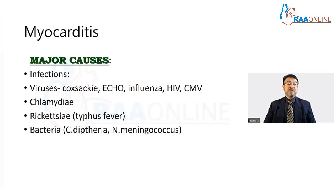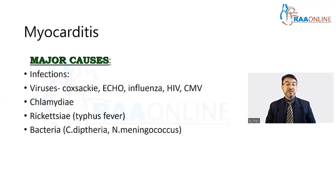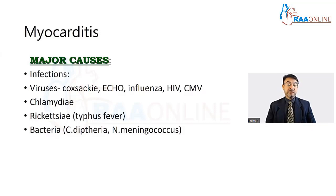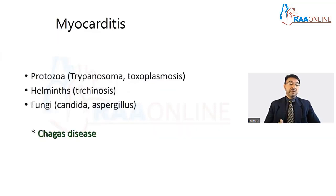The major causes of myocarditis include both infective and non-infectious factors. Among the infectious causes, viruses such as Coxsackievirus, echovirus, influenza, HIV, and cytomegalovirus are important. Others include Chlamydia, Rickettsia which causes typhus fever, and certain types of bacteria such as Clostridium and diphtheria.